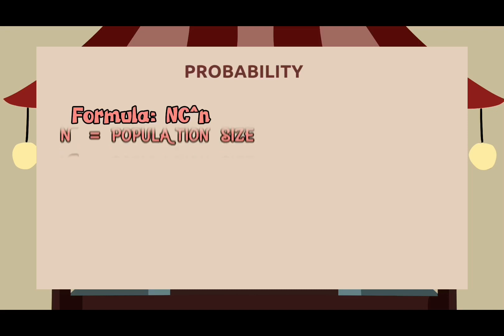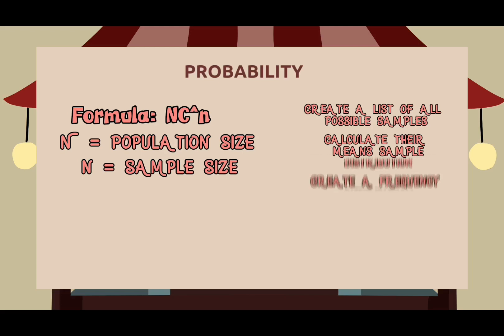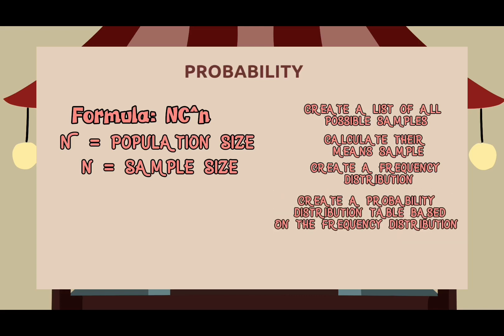Let's look at the chances of winning this game. For this game, we will apply and use the sampling distribution because there are numerous mechanisms involved in sampling distribution. Let's start by looking at the stages involved in creating the sample distribution of the means. The first step is to calculate the number of possible samples that can be drawn from the population using the formula N combined n, where the big N is the population size and the small n is the sample size. The second step is to create a list of all possible samples and calculate their mean sample. The third step is to create a frequency distribution for the sample we took. The fourth step is to create a probability distribution table based on the frequency distribution.